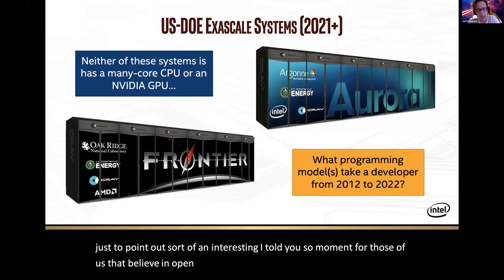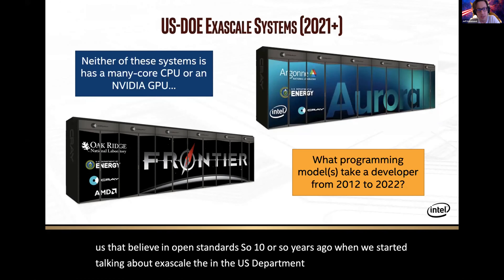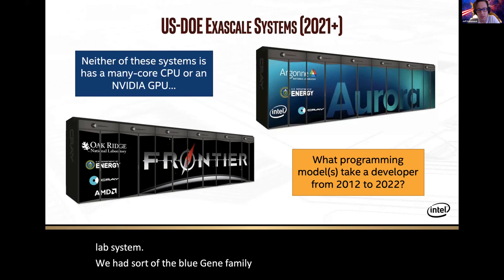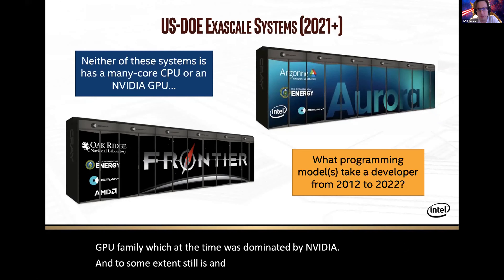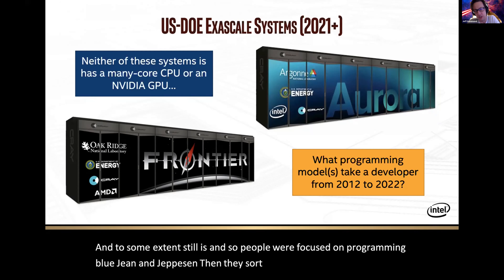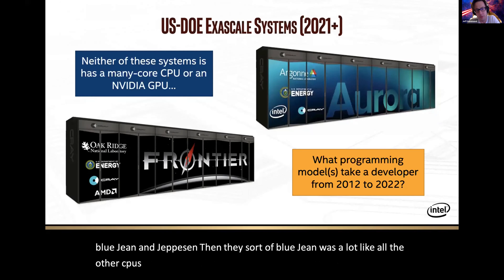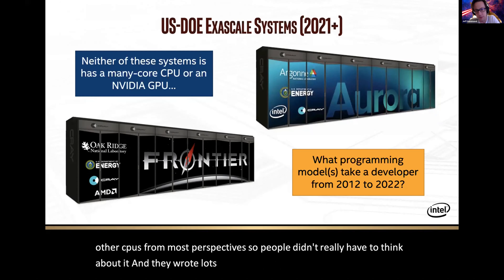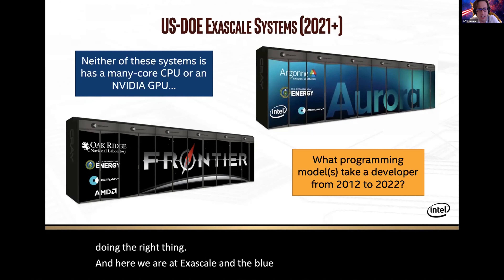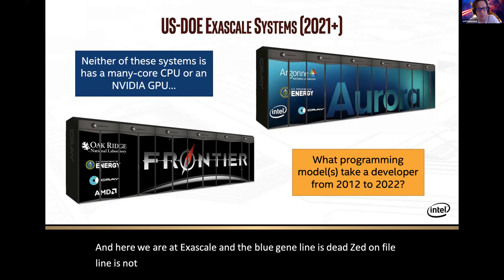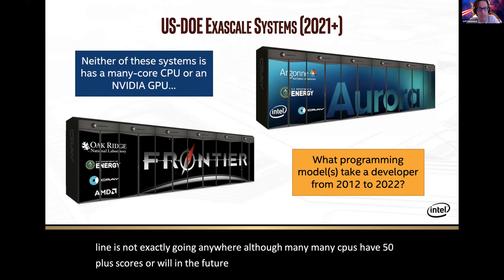So ten or so years ago, when we started talking about exascale in the U.S. Department of Energy lab system, we had the Blue Gene family and then there was this emerging GPU family, which at the time was dominated by NVIDIA. People were focused on programming Blue Gene and GPUs. Blue Gene was a lot like all the other CPUs from most perspectives, so people didn't really have to think about it. And they wrote lots of CUDA and they thought they were doing the right thing. And here we are at exascale and the Blue Gene line is dead. The Xeon Phi line is not exactly going anywhere, although many CPUs have 50-plus cores. So many-core has become normative. You can even buy a desktop now with at least 32 cores for gaming.